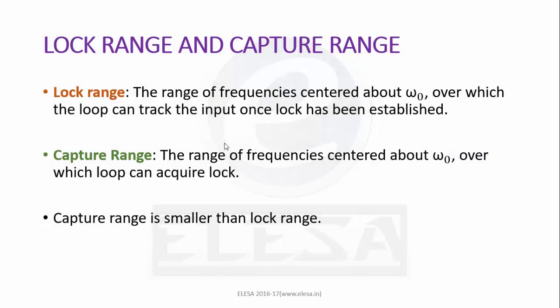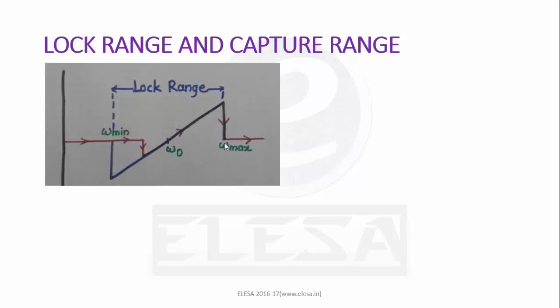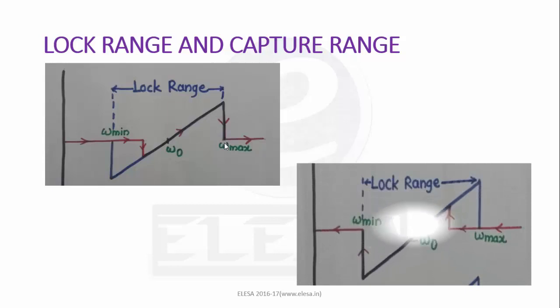Now let's see capture range. The capture range is the range of frequencies centered about free running frequency ω_0 over which loop can acquire lock. That is, the lock can be established again if the incoming signal frequency ω_in gets close enough to range of frequencies ω_0 - ω_C to ω_0 + ω_C.